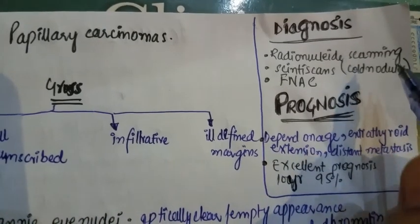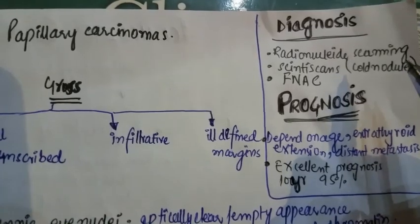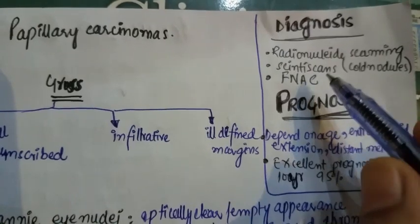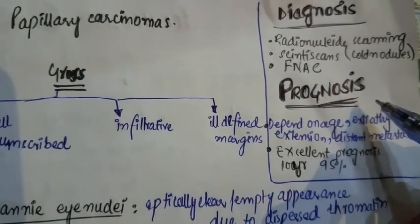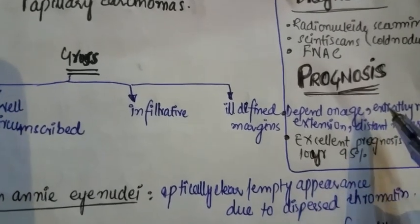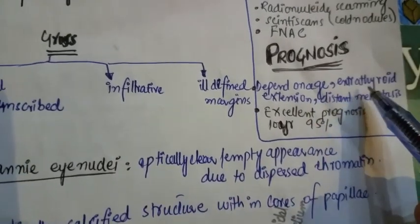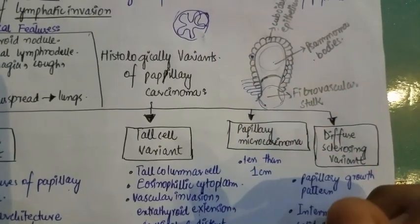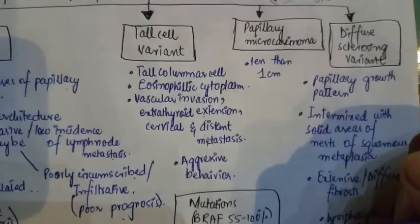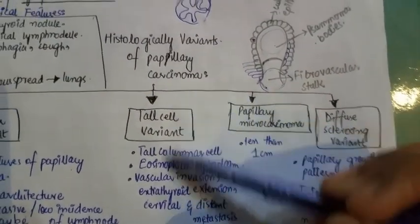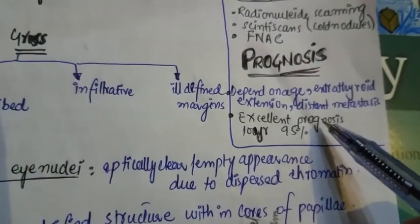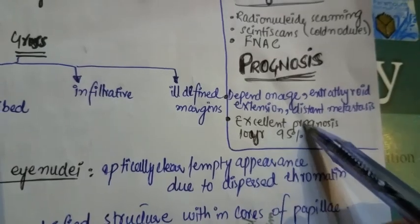Diagnostic criteria include radionuclide scanning, where cold nodules are identified because radioactive iodine is not taken up by the malignant cells. Fine needle aspiration cytology can also be performed. Prognosis depends on age, extrathyroidal extension, and distant metastasis. For example, the tall cell variant, with extrathyroidal extension and occurrence in older individuals, has a bad prognosis, while other variants have excellent prognosis with a 10-year survival rate of 95%.